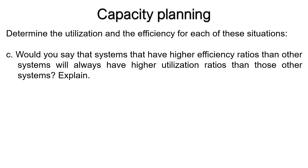For the last question, the answer is no. Systems that have higher efficiency ratios than other systems will not always have higher utilization ratios. This is because efficiency is the ratio of actual output to effective capacity, while utilization is the ratio of actual output to design capacity. Systems with high efficiency efficiently use the effective capacity; however, this effective capacity may be very low compared to the design capacity, and consequently the utilization is low.